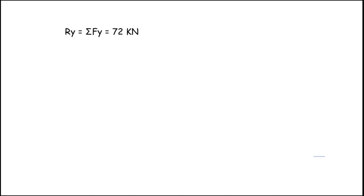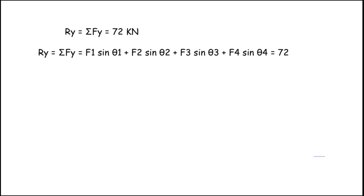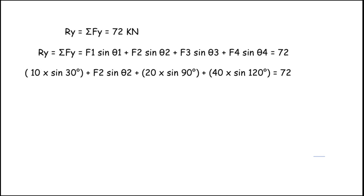Now for the y-axis: Ry = ΣFy = 72 kN. The formula is: F1·sin θ1 + F2·sin θ2 + F3·sin θ3 + F4·sin θ4 = 72. Substituting known values: 10·sin 30° + F2·sin θ2 + 20·sin 90° + 40·sin 120° = 72.